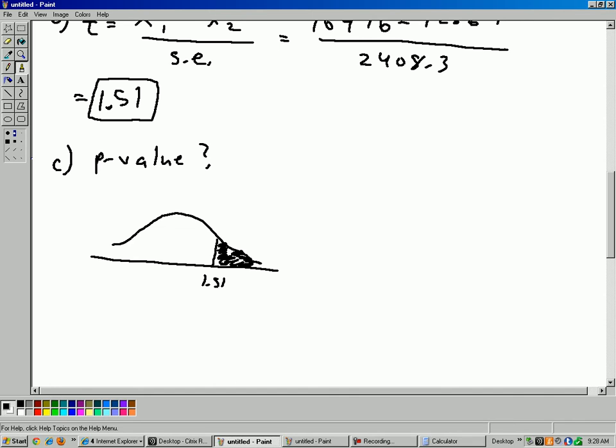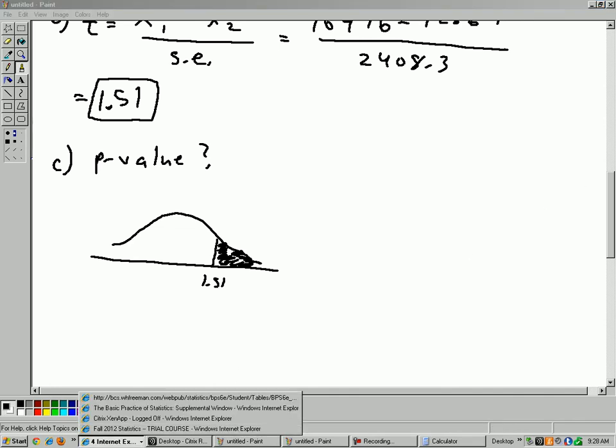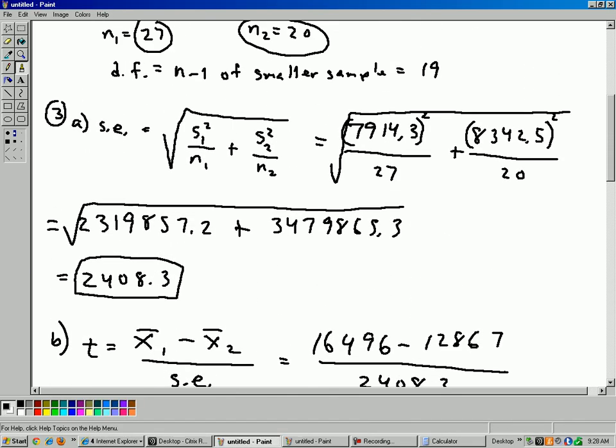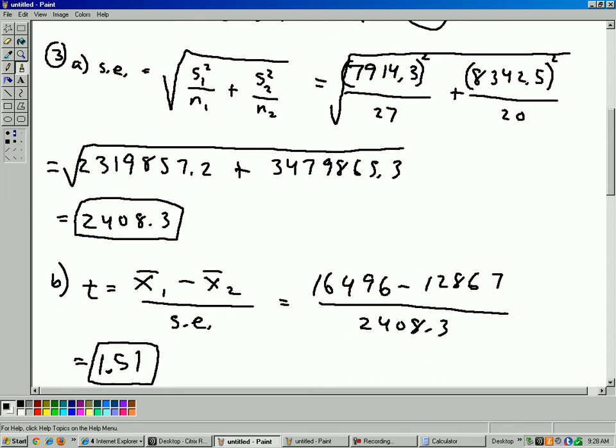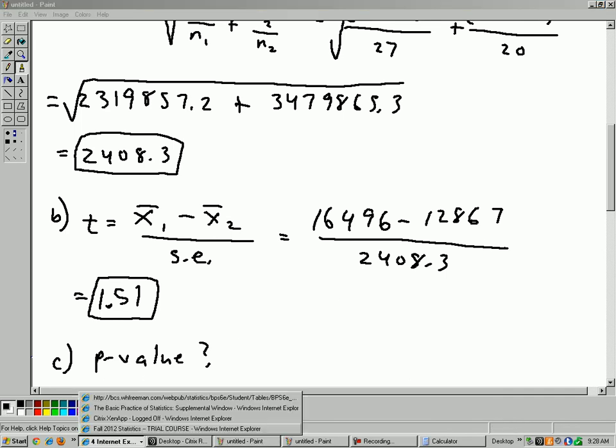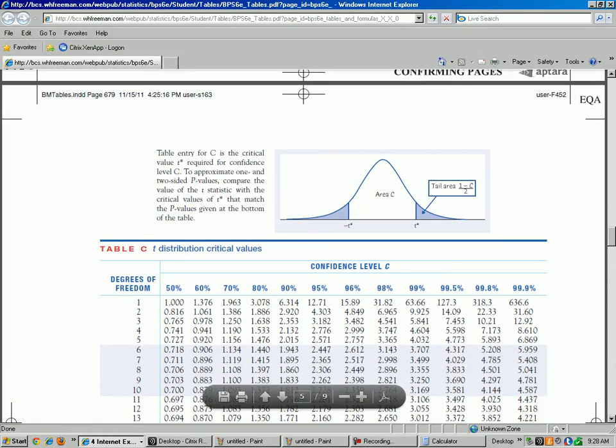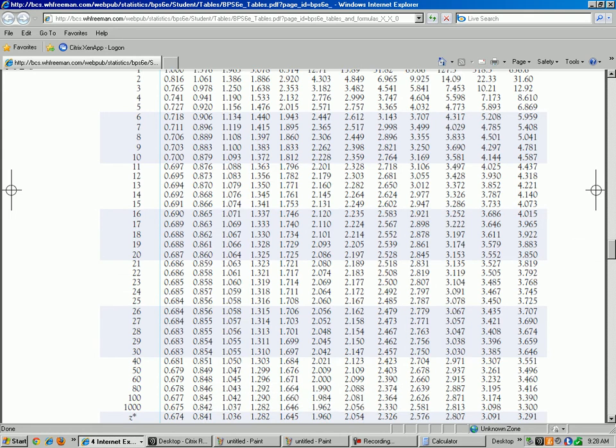So, look up 1.51. And the degrees of freedom. We need that. Degrees of freedom is right here. 19. That's one less than the smaller sample there. So here's, back to the table. So find 19 degrees of freedom. Here's 19 degrees of freedom. And I just look along the row here until I find 1.51.